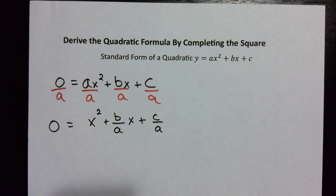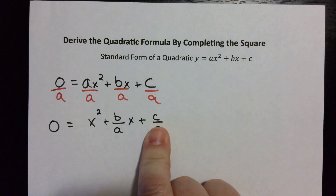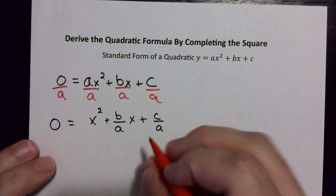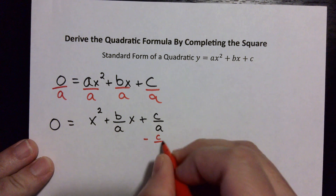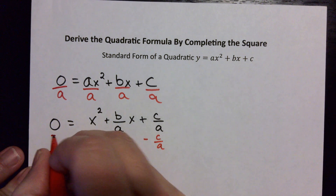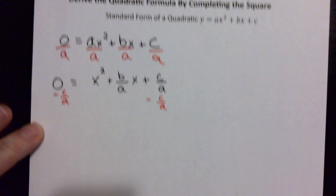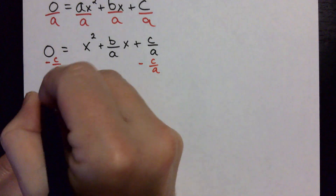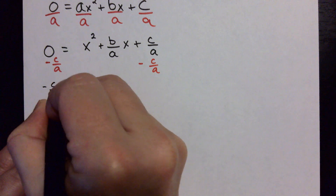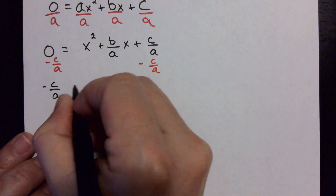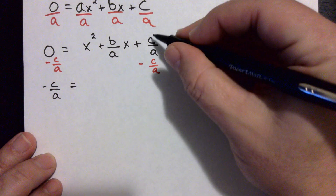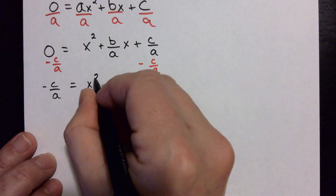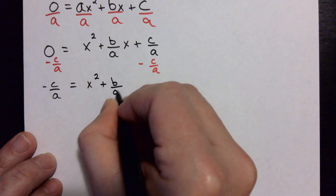Now I'm going to get the last term and move it over to the other side by subtraction — subtract c/a from both sides. That gives me negative c/a on the left side, and on the right side the c/a cancels, leaving just x² + (b/a)x.